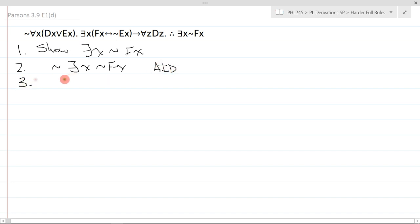Now that lets me quantify or negate immediately into for all x, not not fx. Now it's tempting to sort of get rid of these two negations when I quantify or negate, but you can't do that. You need to do it later. So for now, I'll just say 2QN.